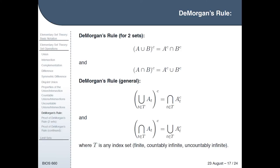One rule of set theory that's sometimes useful is De Morgan's Rule, which says that (A union B) complement equals A complement intersect B complement. Similarly, (A intersect B) complement equals A complement union B complement. This extends to the general case: the complement of a union of many things equals the intersection of their complements, and vice versa. T can be any sort of index set — finite, countably infinite, uncountably infinite, etc.